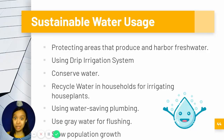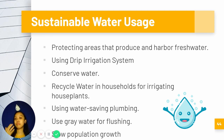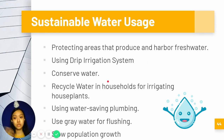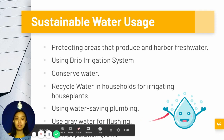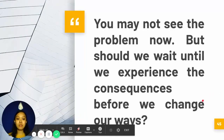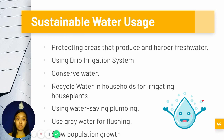We can protect areas that produce and harbor fresh water, promote a cleaner environment, and use drip irrigation systems to minimize water use in farming. We should conserve water in our own ways — recycling household water to irrigate garden plants, using gray water for flushing toilets, and also working to control population growth, since fewer people means less water use.